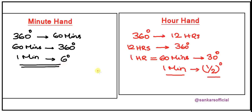In one minute span of time, the minute hand and the hour hand both rotate in the clockwise direction, and the relative separation between these two hands changes by a factor of 5.5 degrees. Using this aspect, questions pertaining to the rotation dynamics of the clock can be solved.